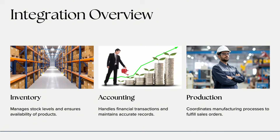One of the biggest strengths of SAP is integration, and SAP SD is right at the center of it. Let's look at how SD connects with MM, FI, and PP. For integration with MM (Materials Management): during delivery in SD, when goods are issued to the customer, stock levels in MM are automatically reduced. The system creates a material document that updates inventory. SD also depends on MM for product master data, pricing, and availability. For example, when you post a goods issue for a delivery, SD triggers movement type 601 in MM, reducing finished goods stock.